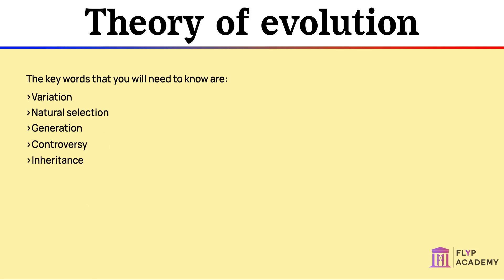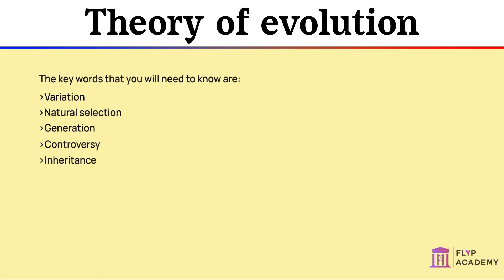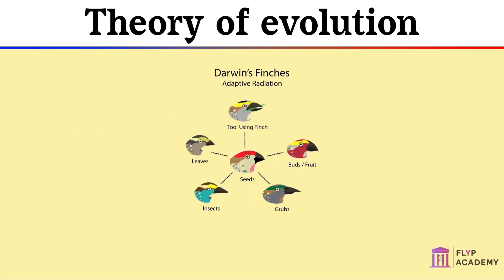The Theory of Evolution was proposed by an English naturalist called Charles Darwin. Darwin embarked on a five-year voyage around the world on a ship called HMS Beagle in the 19th century. While travelling, Darwin observed many organisms, and during a stay on the Galapagos Islands, he collected samples and made drawings of the organisms that he saw. These included finches, tortoises, and insects.